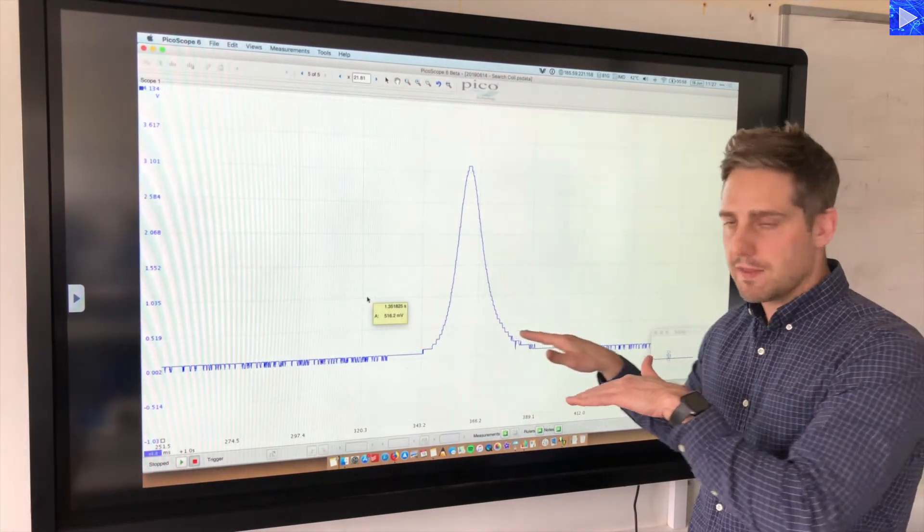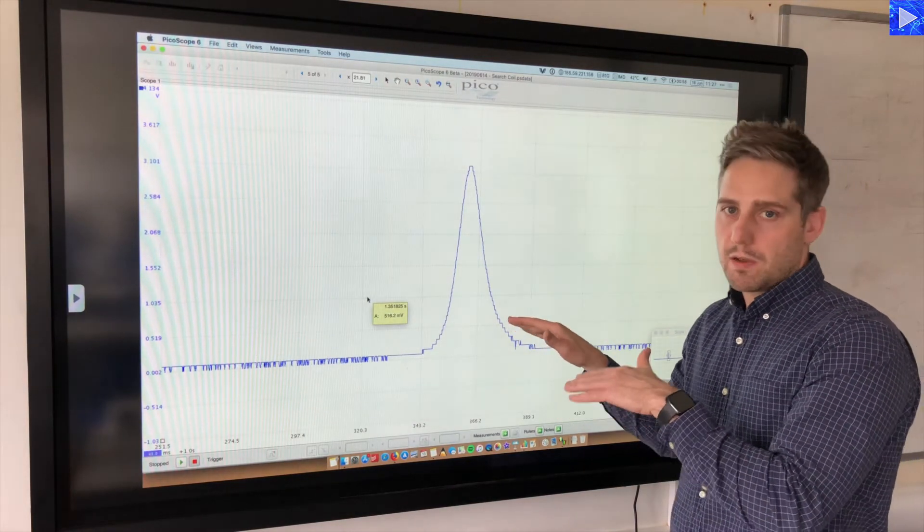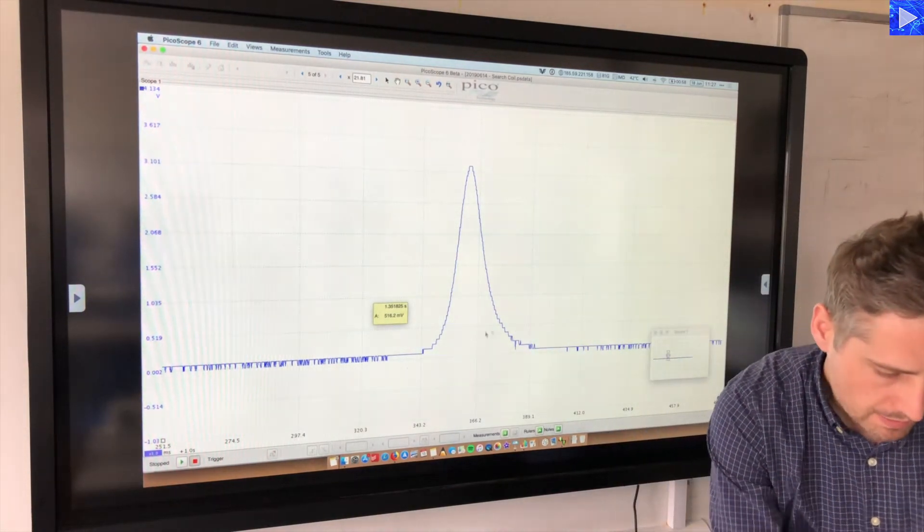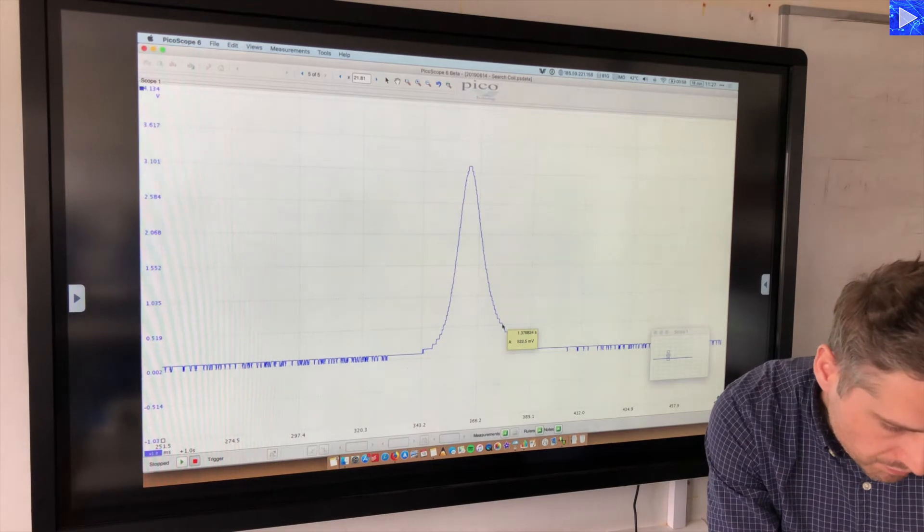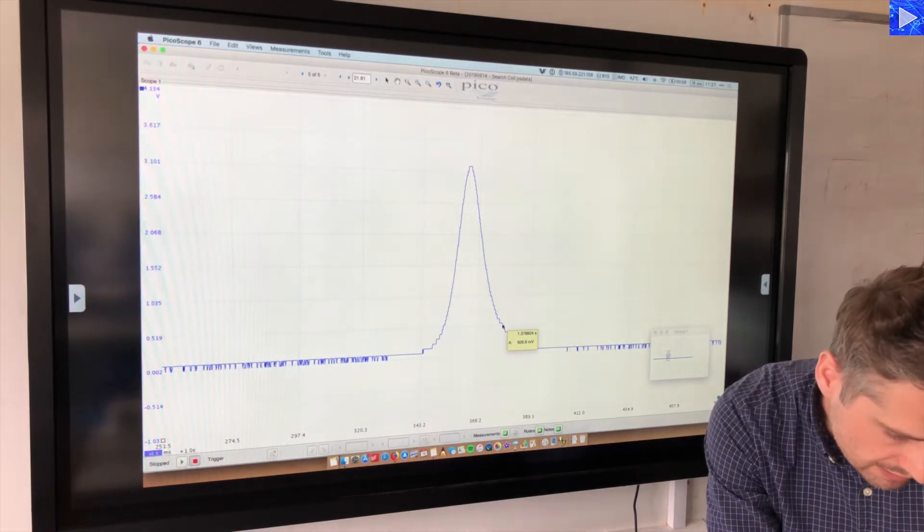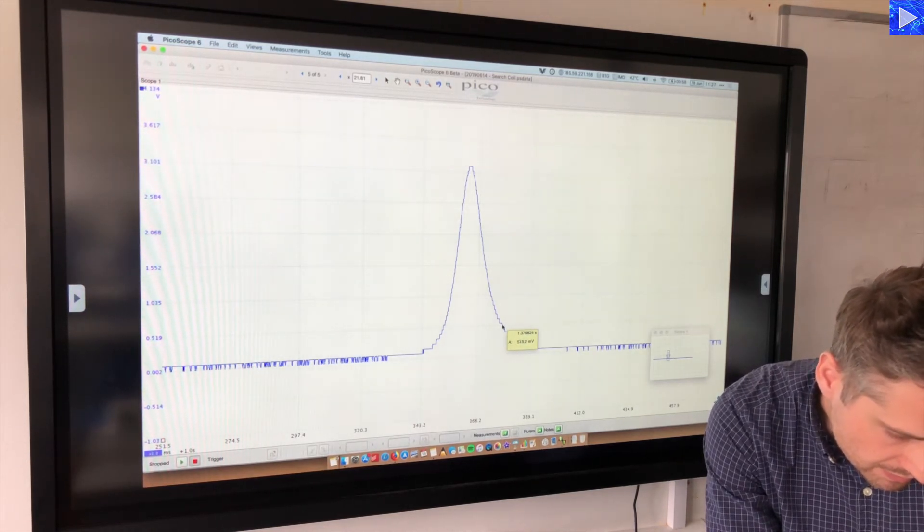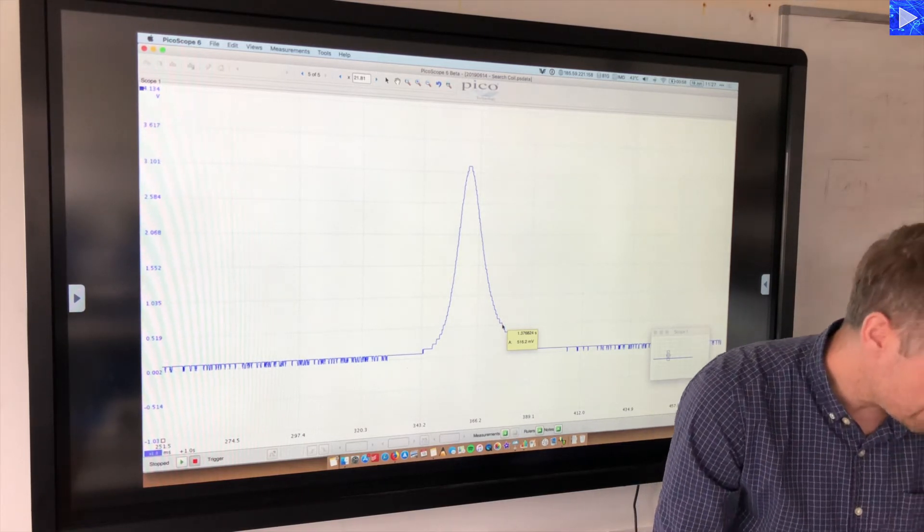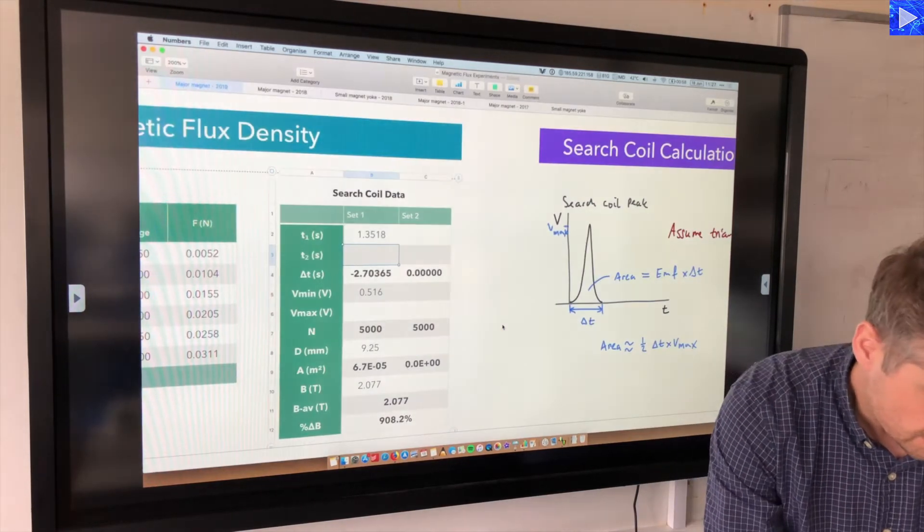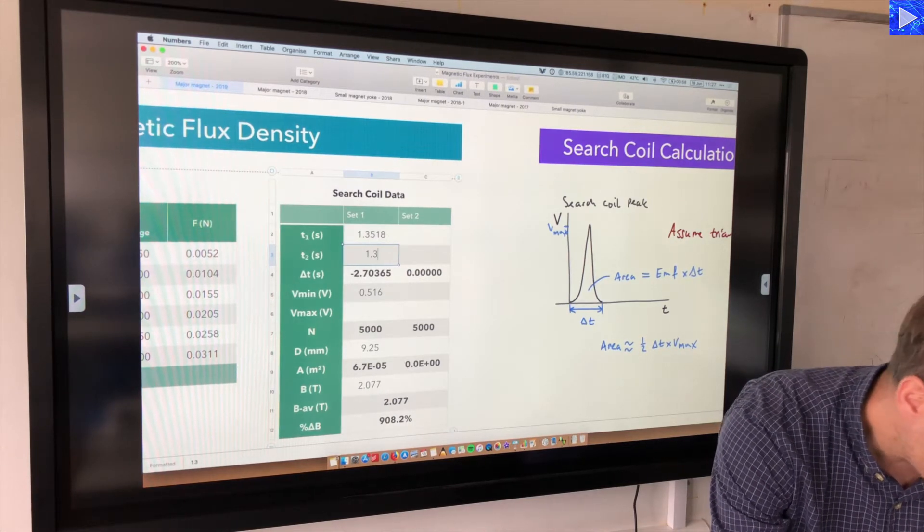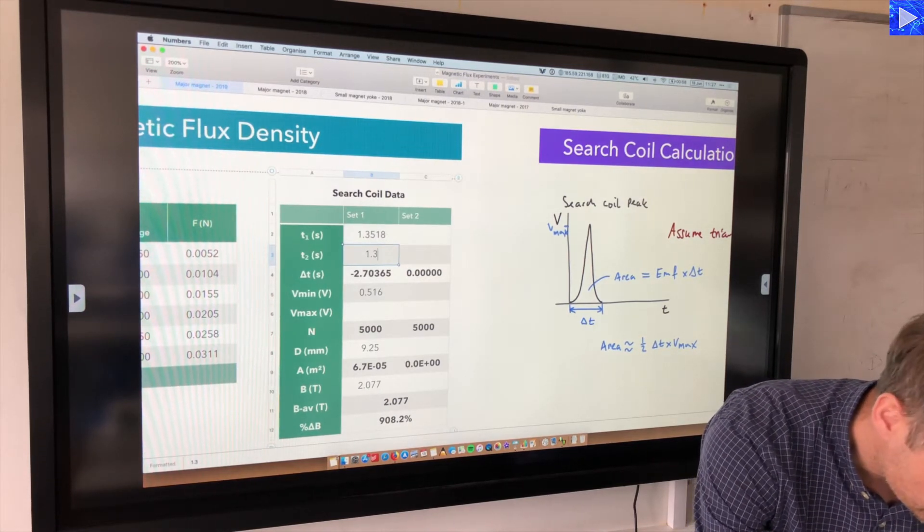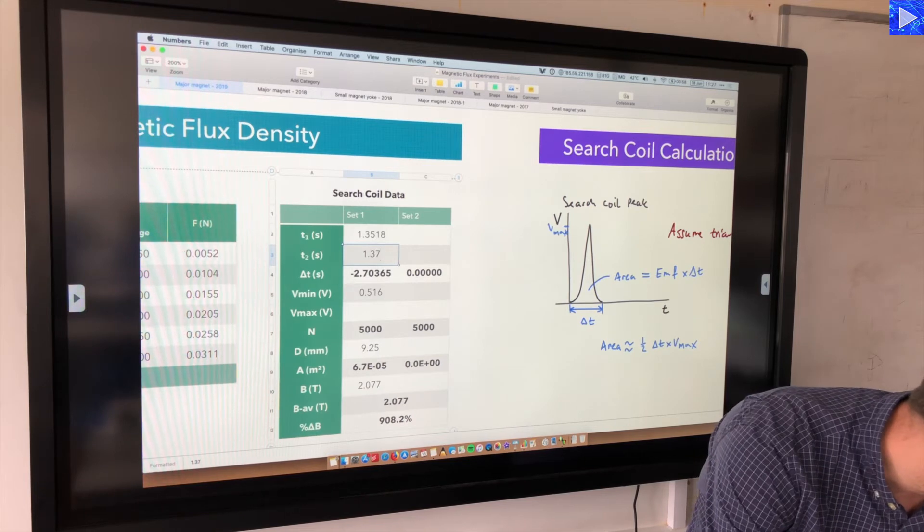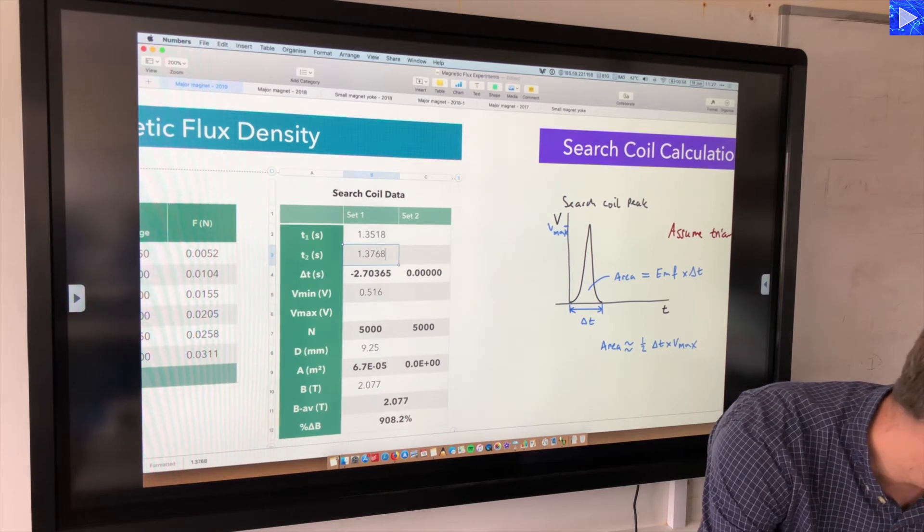Okay, and the minimum voltage was 516.2 millivolts. Now we do the same thing over here. I need to make sure I get the same voltage reading over on this side of the peak, so looking for 516.2. There we are. Okay, so that's 1.376824.